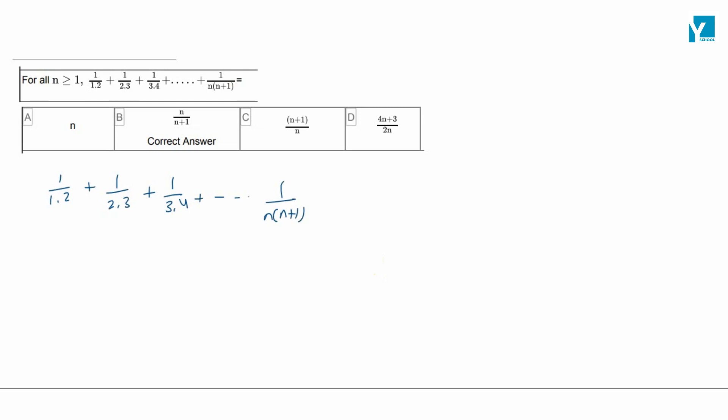So, we will find this equal to this term. This is what we have given to you: 1 upon n into n plus 1. This we will accept as n plus 1 minus n upon n into n plus 1. Now, this is what we have: 1 upon n minus 1 upon n plus 1.